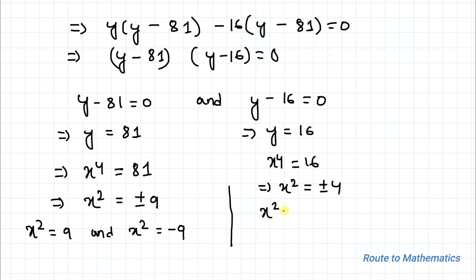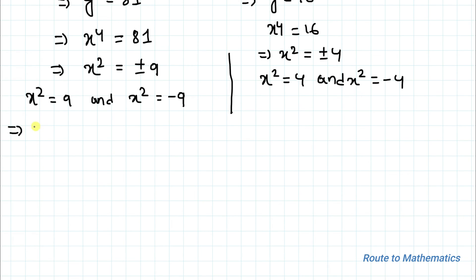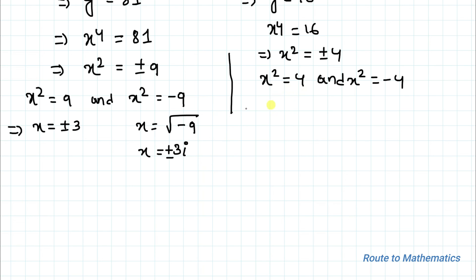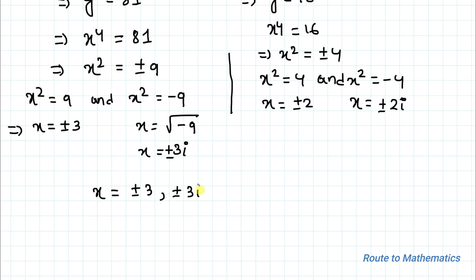Similarly for y equals 16, x to the power 4 equals 16, so x squared equals plus or minus 4. From x squared equals 9 we get x equals plus or minus 3. From x squared equals minus 9, x equals plus or minus 3 iota, since the square root of minus 1 is iota. From x squared equals 4 we get x equals plus or minus 2, and from x squared equals minus 4 we get x equals plus or minus 2 iota. So the solutions for x are plus or minus 3, plus or minus 3 iota, plus or minus 2, and plus or minus 2 iota.